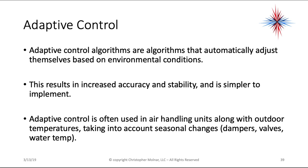Adaptive control is the final control algorithm. Adaptive control algorithms automatically adjust themselves based on environmental conditions, resulting in increased accuracy and stability and simpler implementation. Adaptive control is often used in air handling units accounting for outdoor temperatures and seasonal changes — adjusting dampers, valves, water temperatures, and first/second stage cooling based on outdoor conditions, which affects the building's ability to lose and gain heat through its walls, windows, and doors.